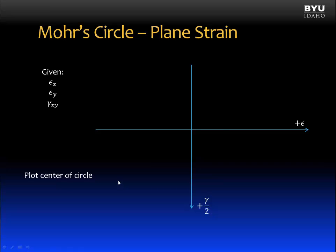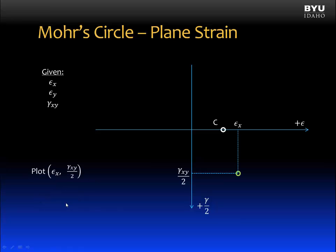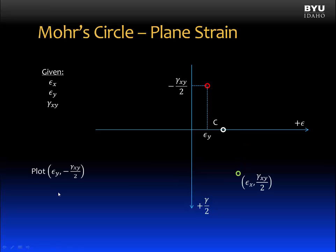Next, we will plot the center of the circle using the equation for the average of the normal strains. The next step is to plot the x-face, where we will plot epsilon x and gamma xy divided by two, paying careful attention to sign. The next step will be to plot the y-face, which is epsilon y and negative gamma xy divided by two.